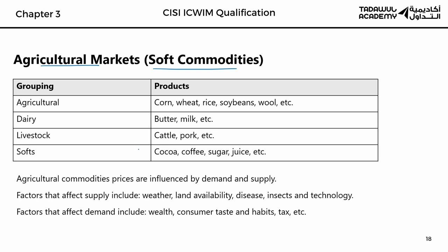The same questions come up over and over again on soft and hard commodities: what factors affect supply and what factors affect demand? The factors that affect supply of agricultural commodities are weather. If the weather is bad, farms will not be able to harvest, and this will affect the supply of cocoa, coffee, wheat, sugar, rice, and so forth.